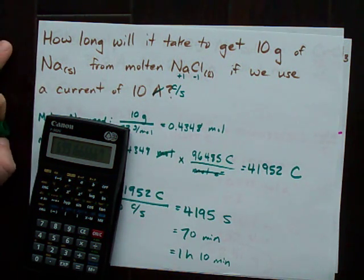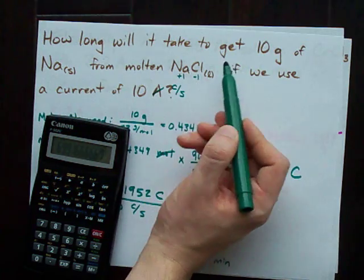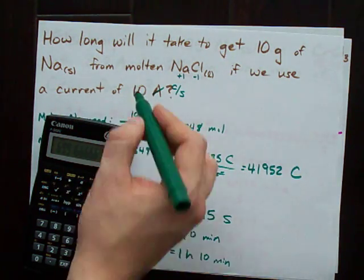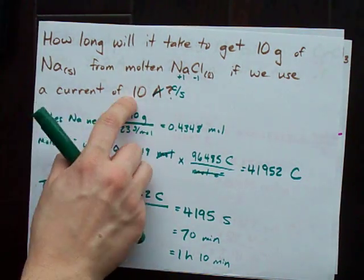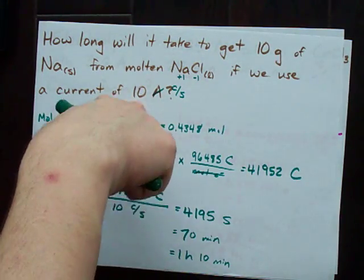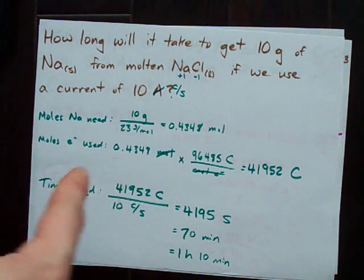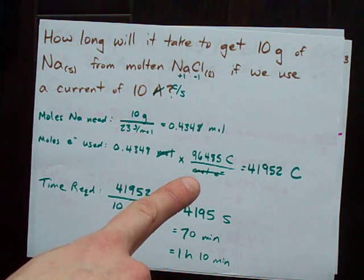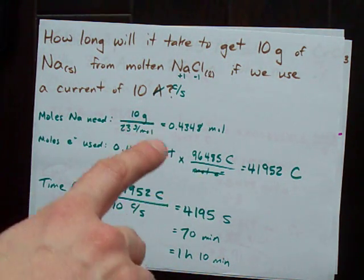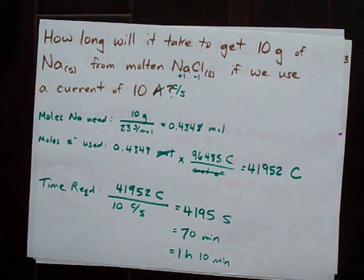So, it would take 70 minutes to convert molten sodium chloride into 10 grams of solid sodium if we pumped in the electrons, that is, at 10 amps. Obviously, if we pumped it in at 10 times the rate, 100 amps, it would have taken a tenth of the time. But here's the point: amps means coulombs per second. The rest of it's stoichiometry converting, I need this many moles of the atoms, so I need this many moles of electrons. And this is my rate of conversion between moles of electrons and coulombs. It's all basic unit stuff. Hey, best of luck to you when you're doing amp work.